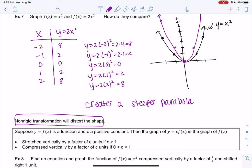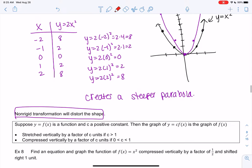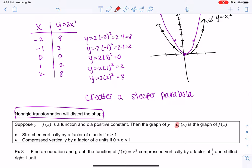So anytime we multiply by a constant we get one of these stretches. So if the constant is bigger than 1 it's going to stretch vertically. It's going to make it grow faster so it stretches it.